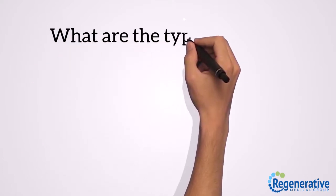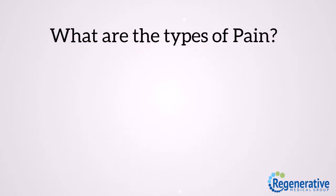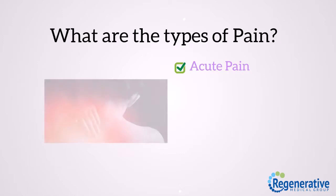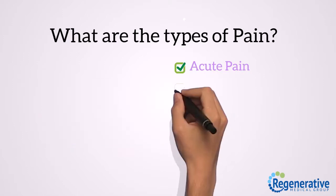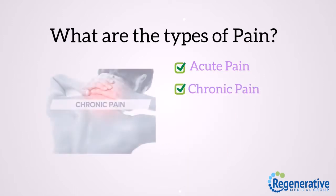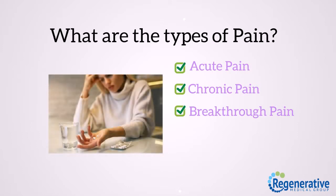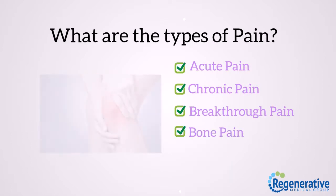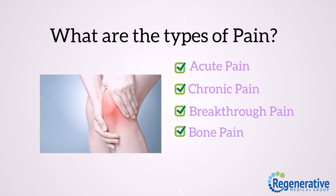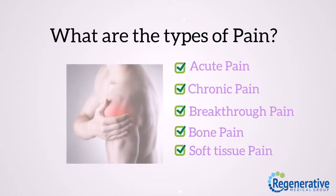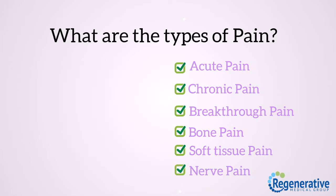What are the types of pain? Acute pain, chronic pain, breakthrough pain, bone pain, soft tissue pain, and nerve pain.